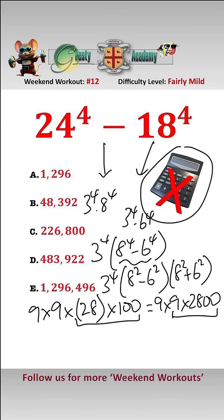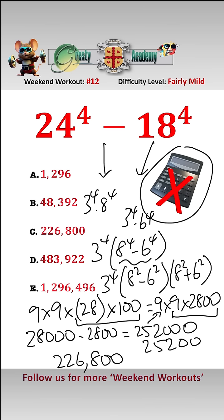Now multiplying by 9, we multiply by 10 and then take off 1. So 9 times 2800 is 28,000 take away 2800 which is 25,200. And then multiplying by the other 9 that gives us 252,000 take away 25,200, and that gives us 226,800 which is answer C.